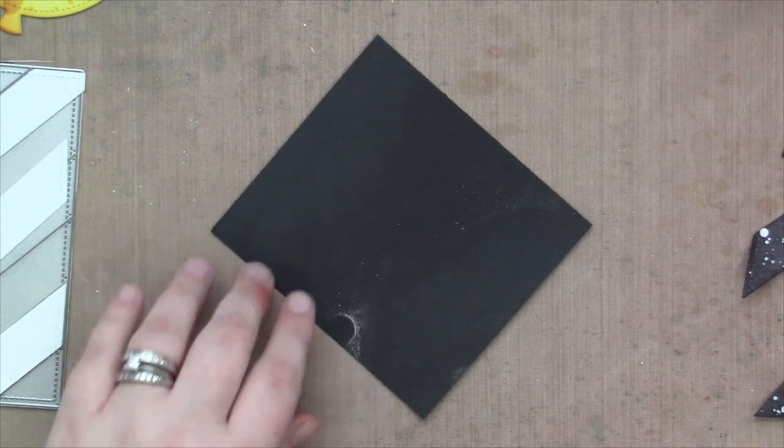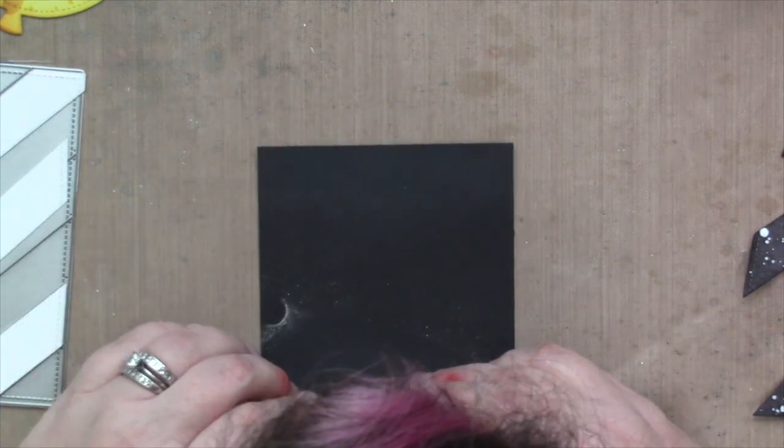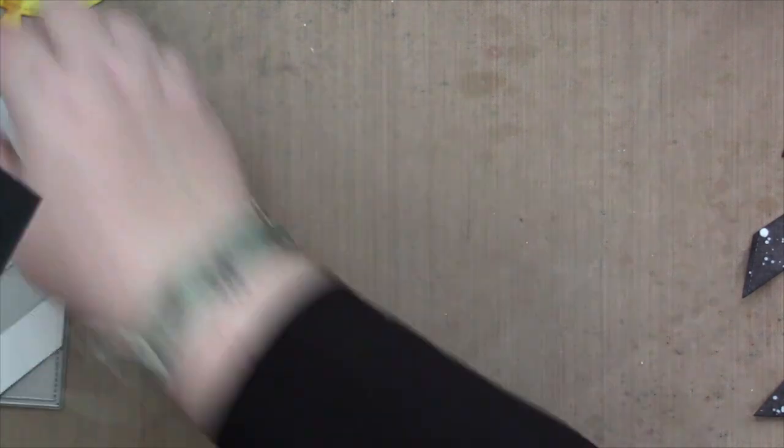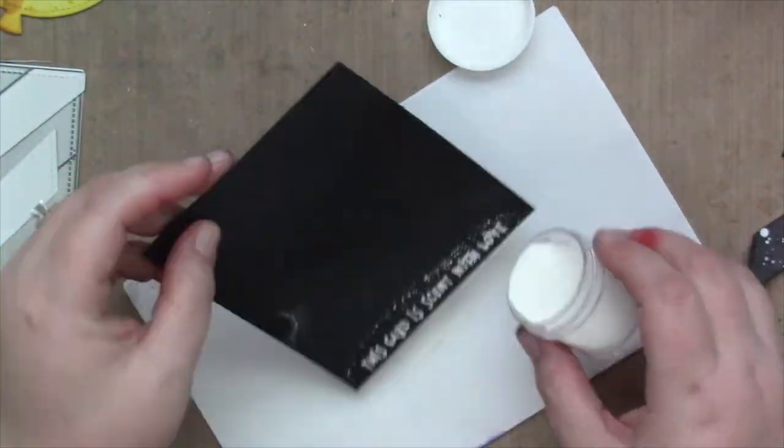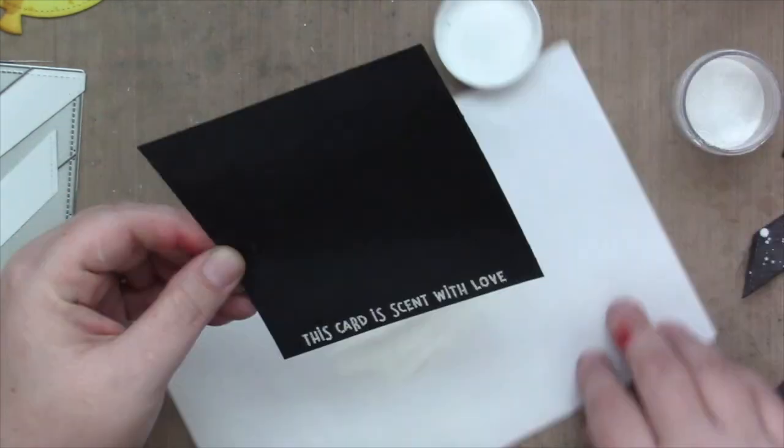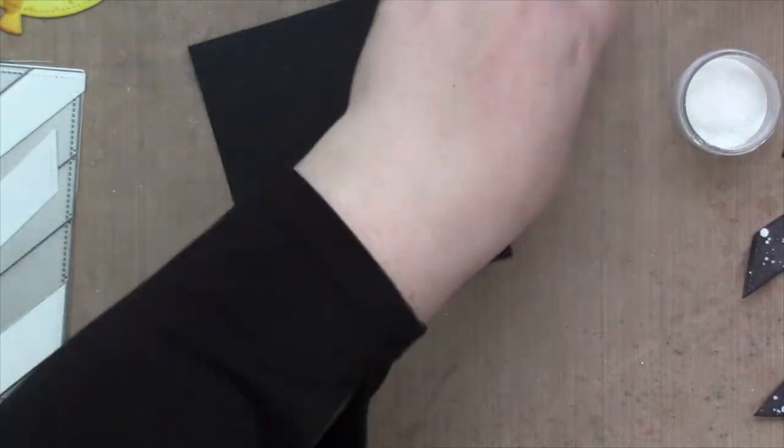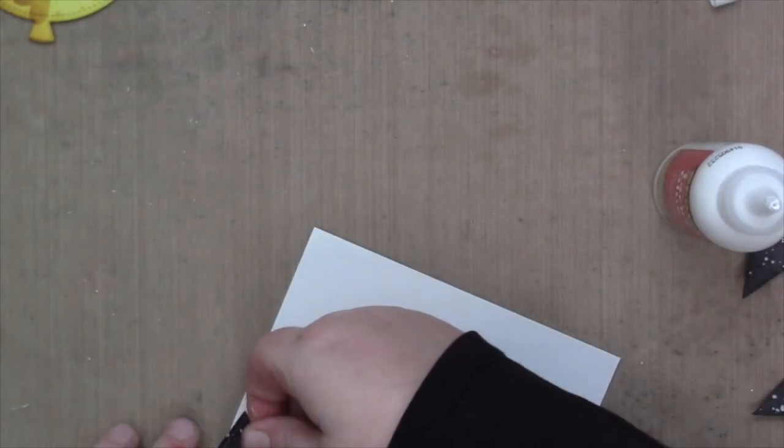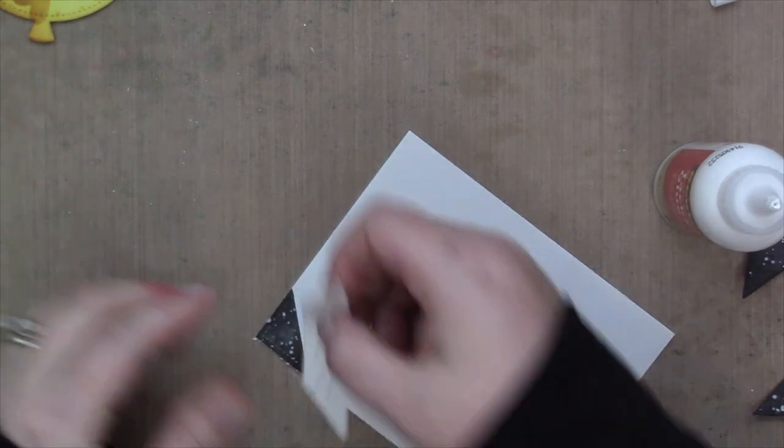While that was drying I decided to heat emboss my sentiment. I am just heat embossing with white powder onto black cardstock and then I'm gonna trim the strip out so I can put it on my card.